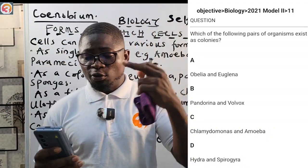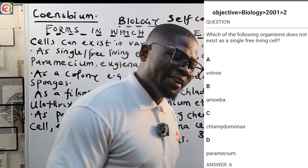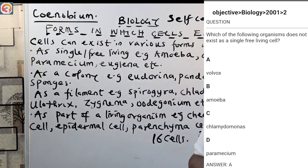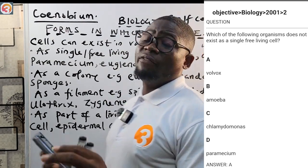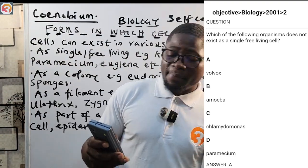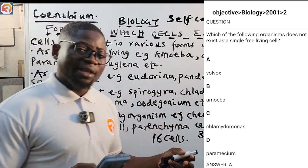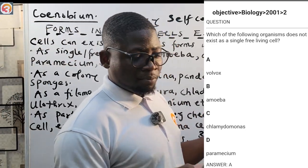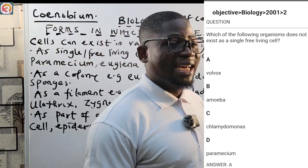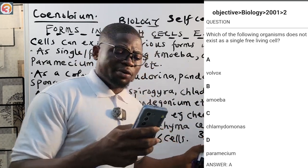Question 2 (2001, No. 2): Which of the following does NOT exist as a single free-living cell? A — Volvox: exists as a colony, so it is NOT single free-living. B — Amoeba: exists as a single free-living cell. C — Chlamydomonas: exists as a single free-living cell. D — Paramecium: also exists as a single free-living cell. The correct answer is A — Volvox.